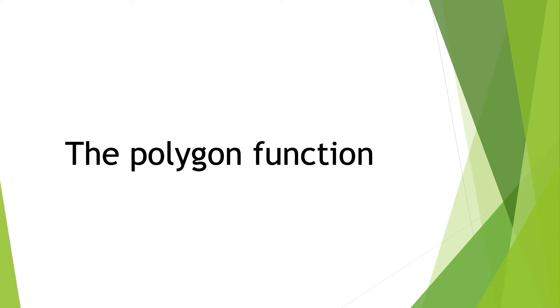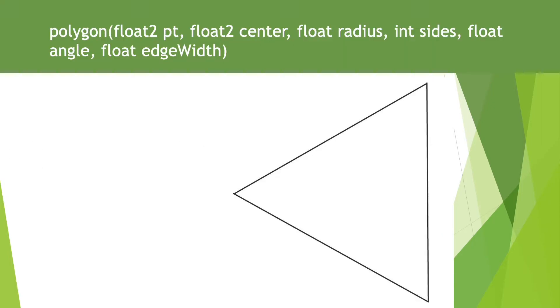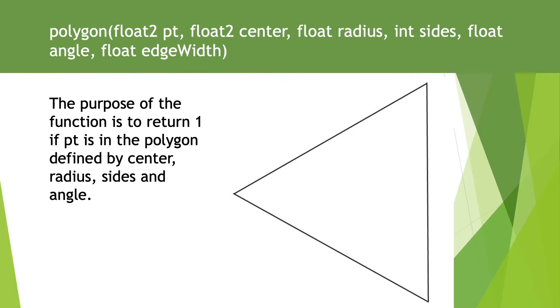The Polygon Function takes six parameters and returns a value between 0 and 1 depending if the test point is inside a polygon defined by a centre, radius, number of sides and a rotation angle.